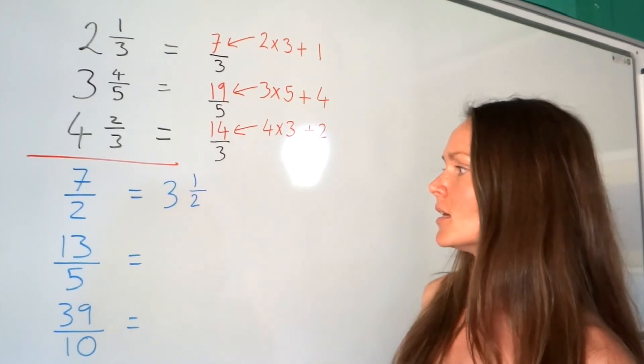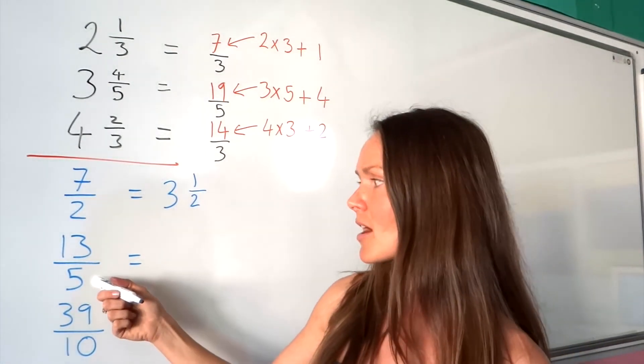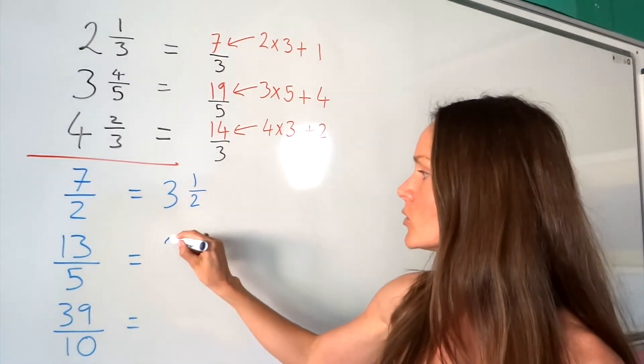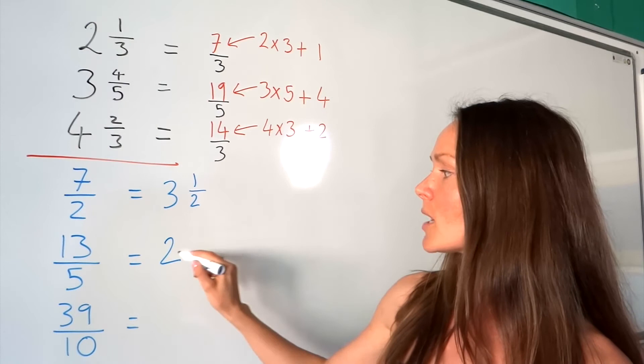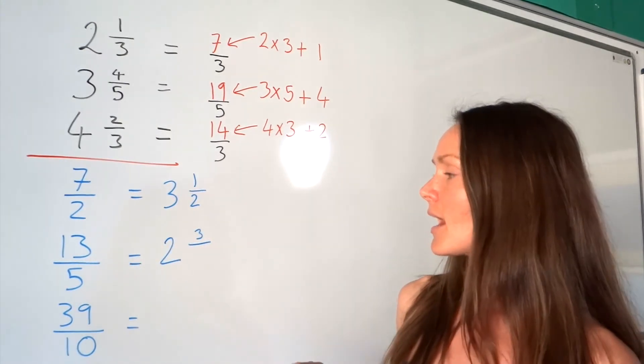For the next example, how many times does 5 fit exactly into 13? It fits 2 times. Two times 5 is 10, so there's a remainder of 3. The denominator stays the same. So 13/5 equals 2 3/5.